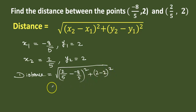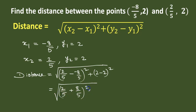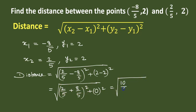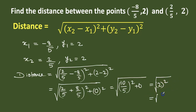This equals square root of 2 by 5 plus 8 by 5, the whole square, plus 0. That gives us 10 by 5, and after cancellation we get 2, so it equals square root of 4, which is 2 units. So the distance between these two points is 2 units.